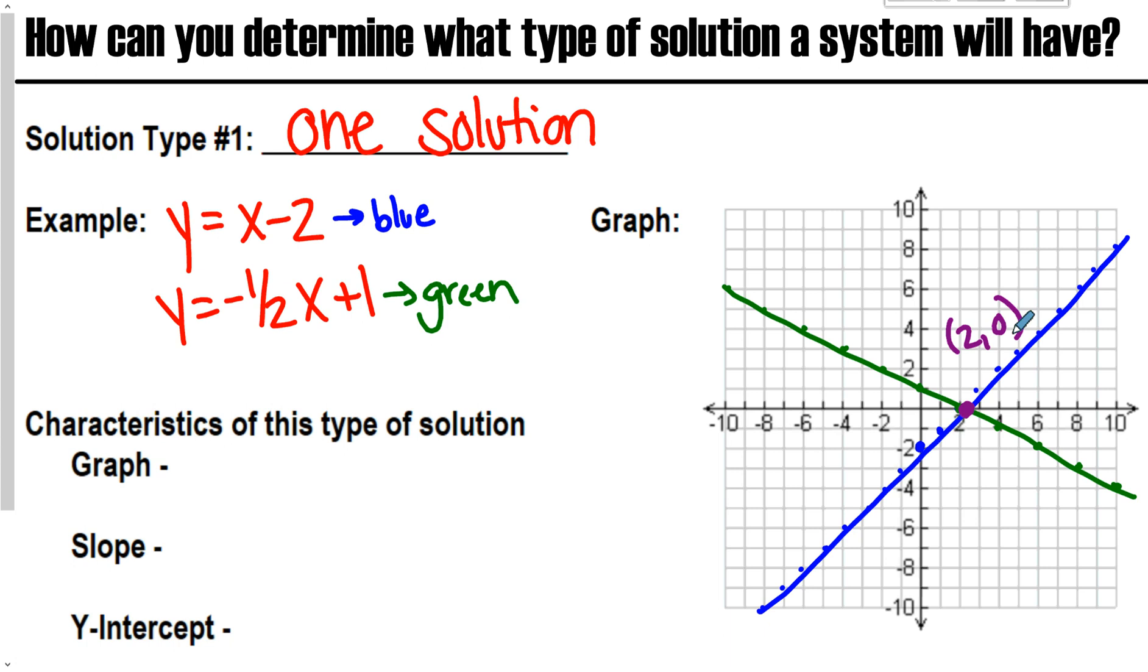So, the characteristics of this, if I'm just looking at it visually in terms of a graph, how a graph tells me it's a one solution is the fact that I have two lines that intersect each other. They literally give me only one possible solution, because they only cross each other one time. On a graph, you know it's one solution because you have intersecting lines. They cross one time, I get one solution.